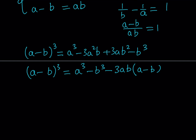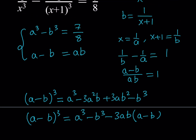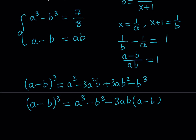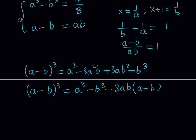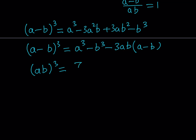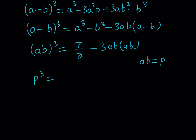I replace a cubed minus b cubed with 7 over 8, and a minus b with ab. This gives an equation entirely in ab. Let ab equal p — the product. So I get p cubed equals 7 over 8 minus 3p squared.